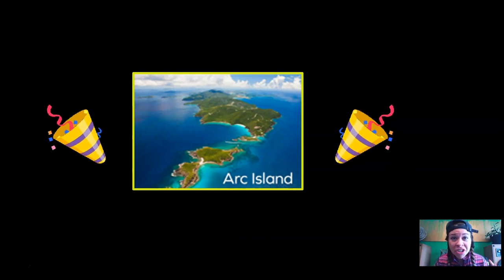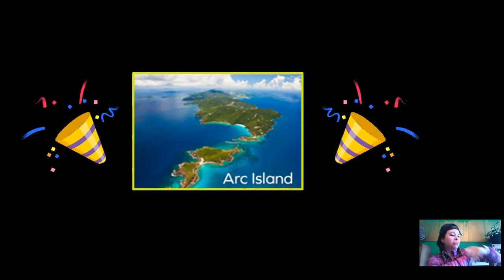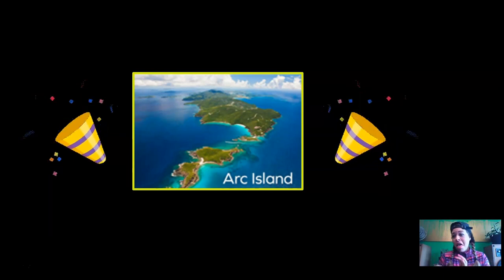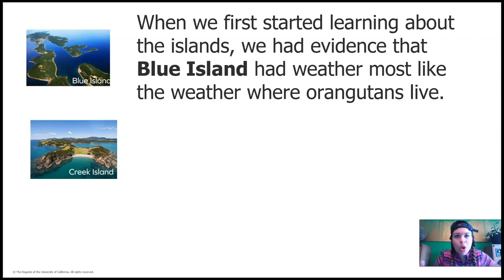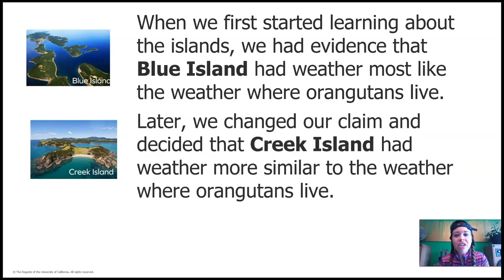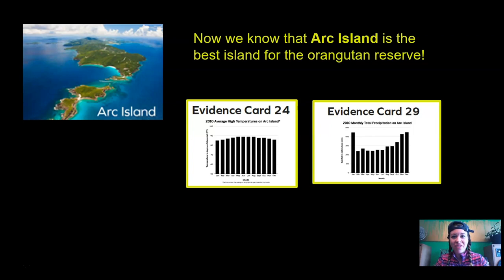Have we used the process of elimination by comparing and analyzing data to make an evidence-based decision to support a claim? I think we have. So which island should we recommend to the Wildlife Protection Organization? It's Arc Island! When we first started, we had evidence that Blue Island had weather most like where orangutans live. Then we changed our claim to Creek Island. That's because scientists change their claims when they get new information, and that's allowed. Now we know that Arc Island is the best island for the orangutan reserve — we know that because we have evidence, and scientists must have evidence to make good, strong claims.